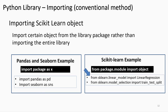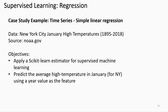These scikit-learn examples demonstrate how to import two objects. For example, the first bullet states: from the scikit-learn module named linear_model, import the LinearRegression object. Whenever the LinearRegression object is used in the program, it will be referred to using the same name without an alias. As a case study, we'll focus on supervised learning and build a model that predicts the average high temperature in January for New York.